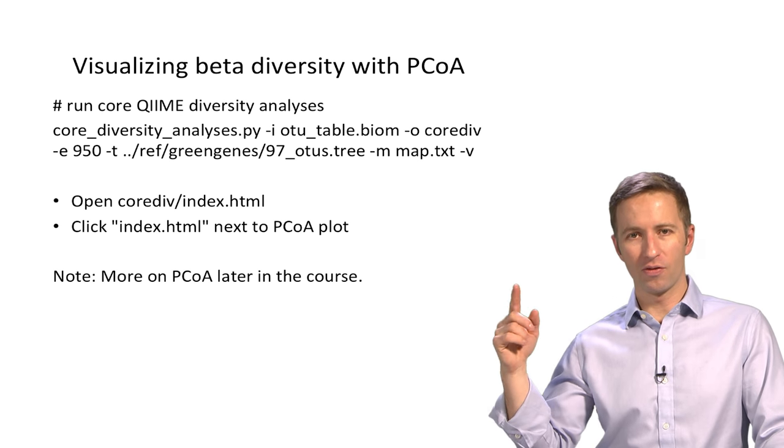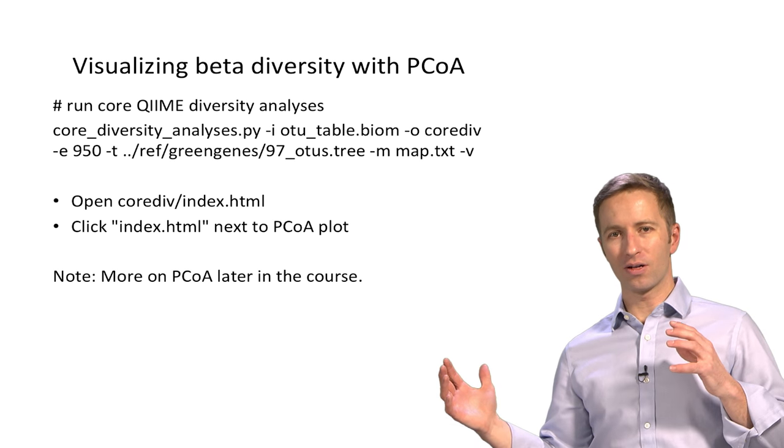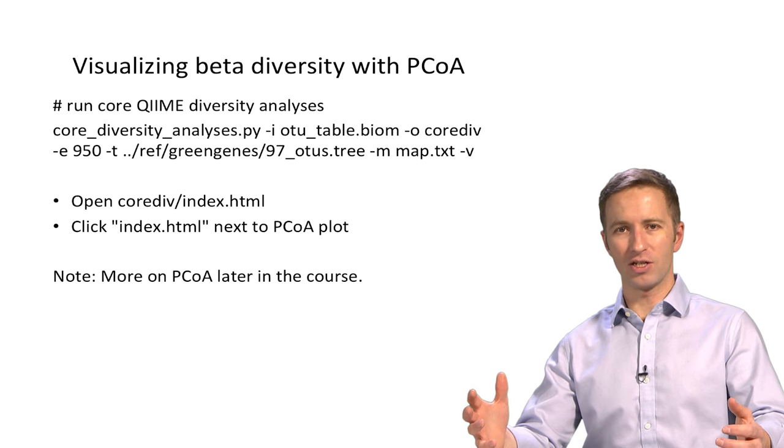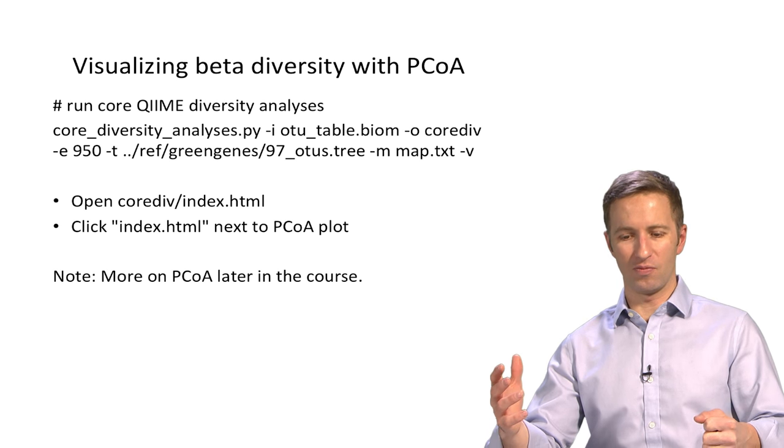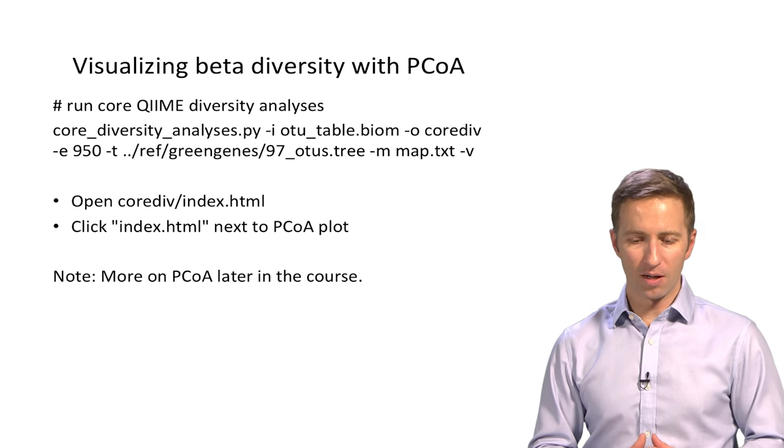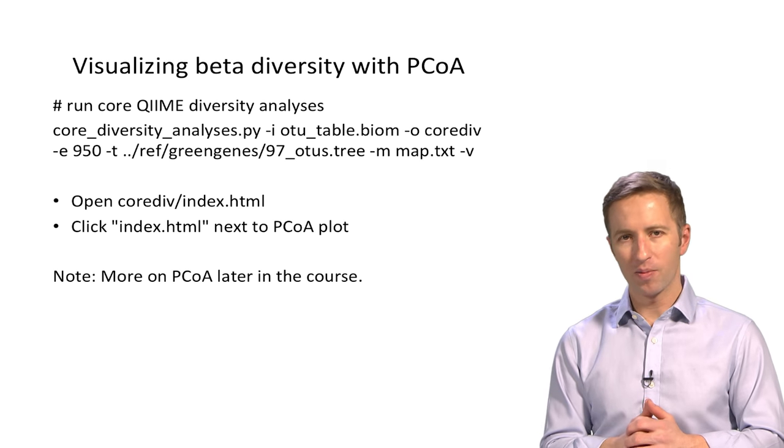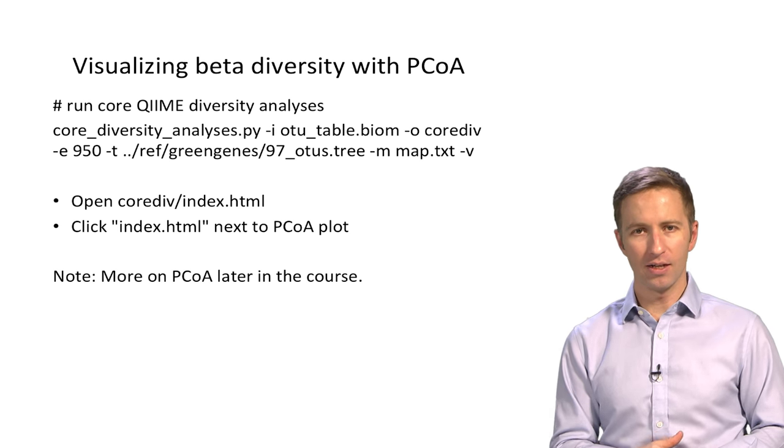So in order to run beta diversity and then visualize it, we have to have some way of taking the huge inter-sample distance matrix, which is going to tell you all of the ecological distances between every pair of samples, every sample and every other sample. So it's all of the pairwise distances.